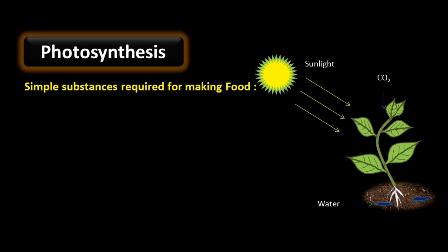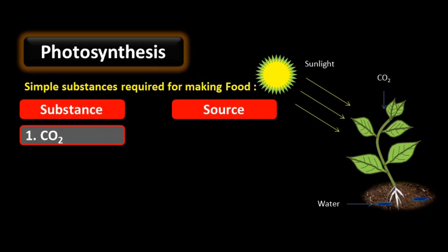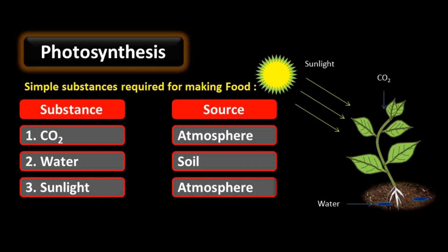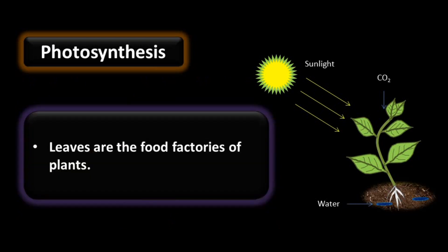Simple substances required for making food are: carbon dioxide — plants get carbon dioxide from the atmosphere; water from soil; sunlight from the atmosphere; and chlorophyll inside the leaves. Leaves are the food factories of plants because all the photosynthesis process is completed inside the leaf.